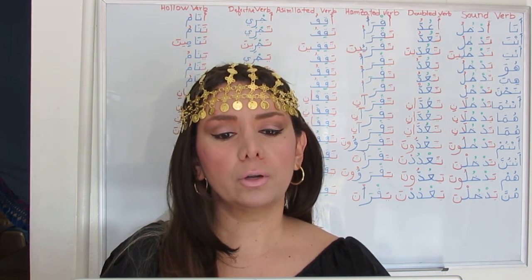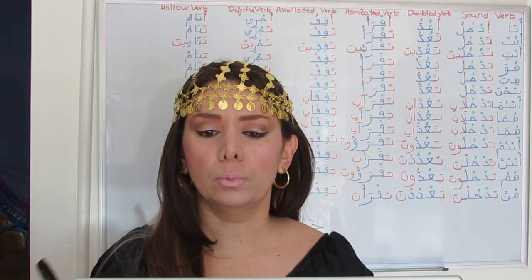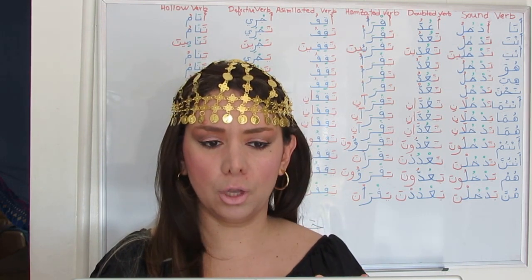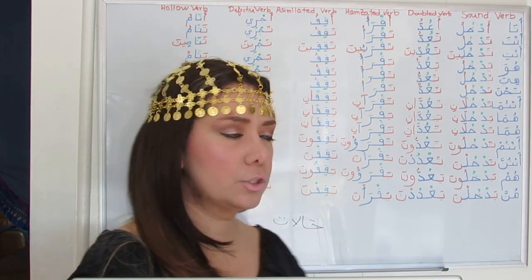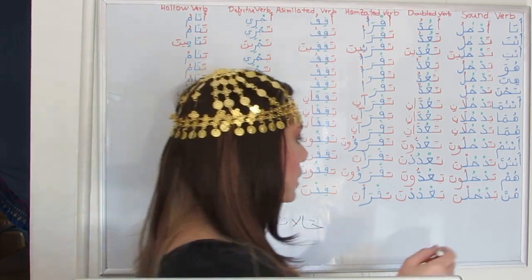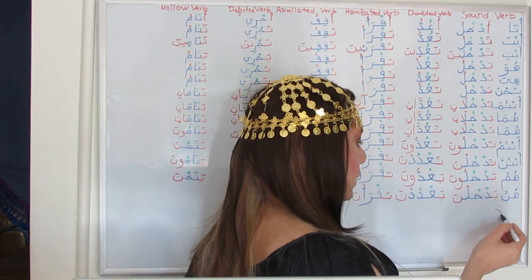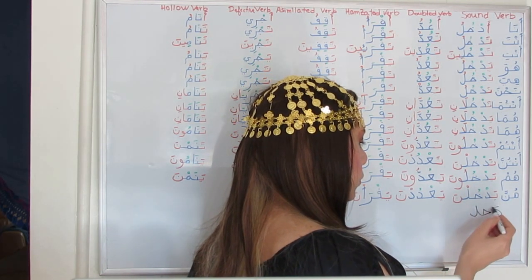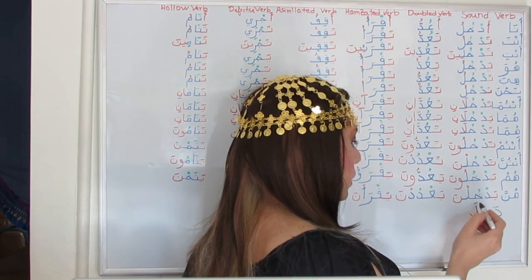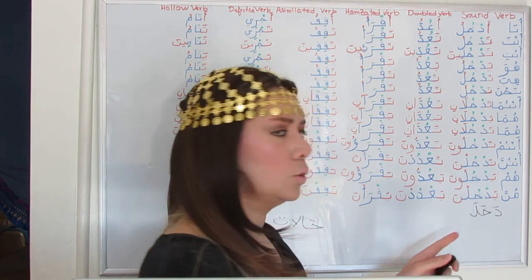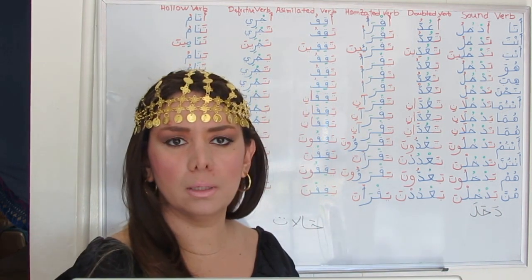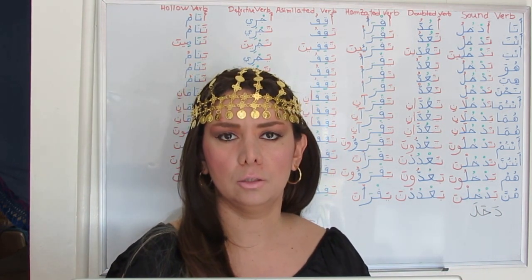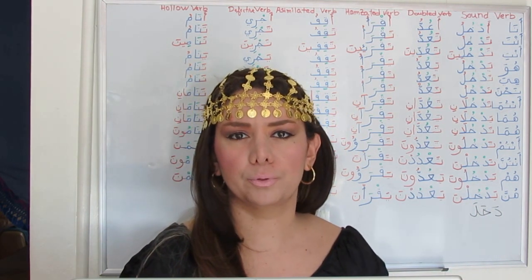The forms of the present tense are derived from the imperfective stem. The stem is the verb. For example, 'dakhala' is the verb — this is the stem that we will be conjugating.